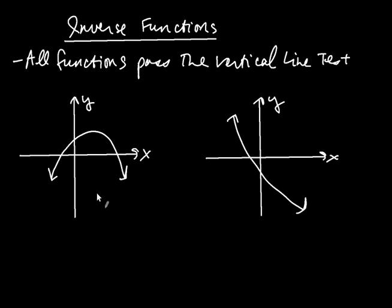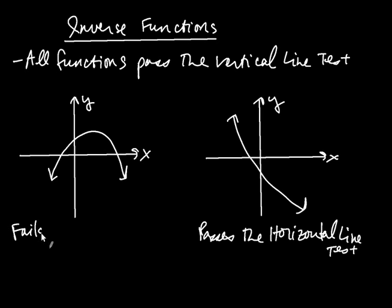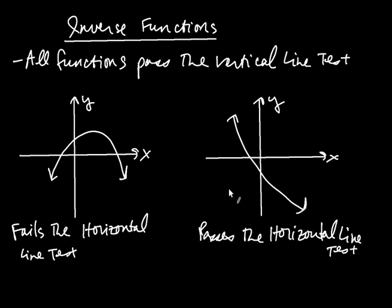I'm looking at two functions here, and these functions differ in a very important way. Not only does this function over here pass the vertical line test, it also passes the horizontal line test. The horizontal line test is: whenever you draw a horizontal line, it only crosses at a maximum of one point. Now, this other function does not pass the horizontal line test — I can draw a horizontal line that crosses twice. So this one passes the horizontal line test, and this one likewise fails the horizontal line test. This second one is still the graph of a function because it passes the vertical line test; it just doesn't pass the horizontal line test.